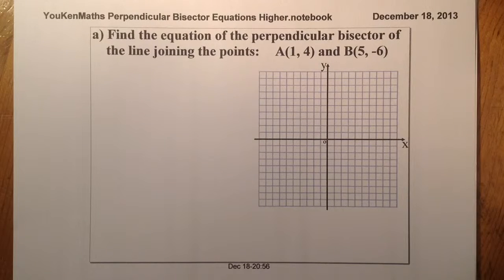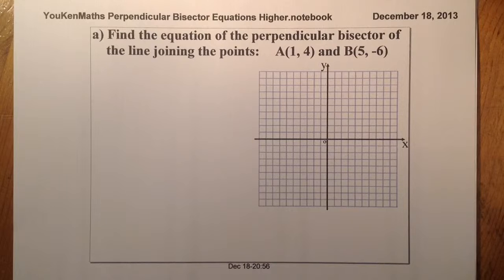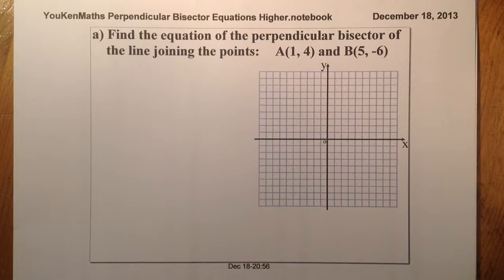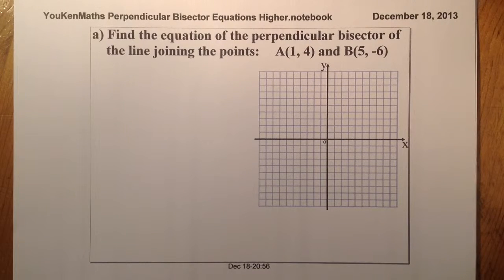Finding the equation of the perpendicular bisector of a line joining two points. The two points could just be at the end of a line, or there could be two vertices on a triangle. The process that we follow would be exactly the same.